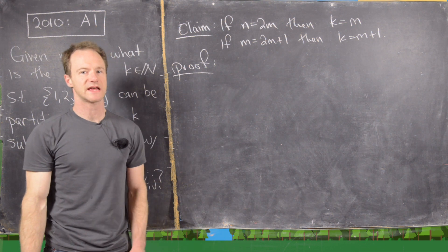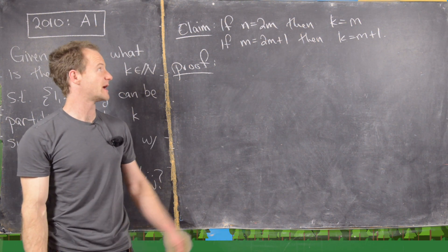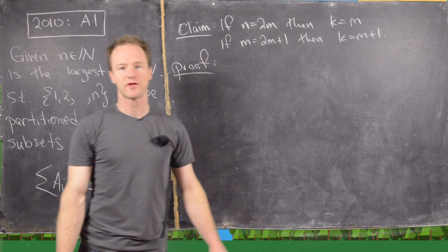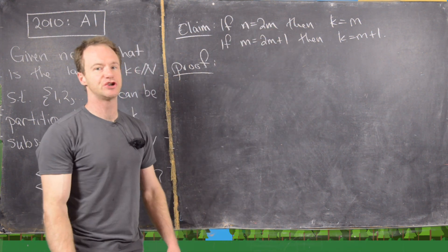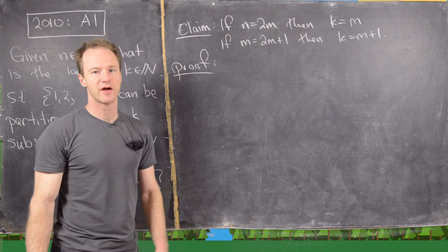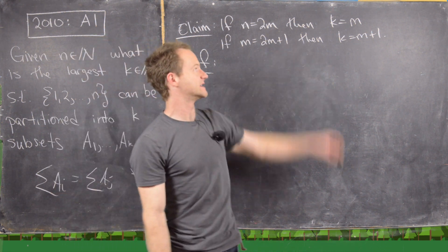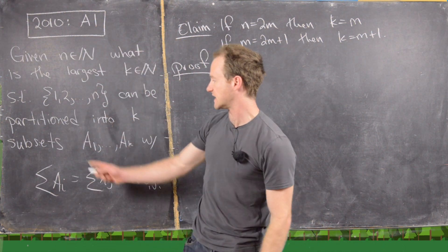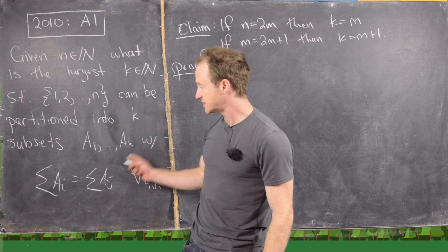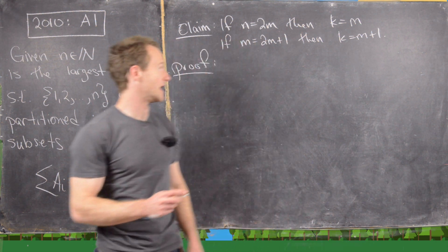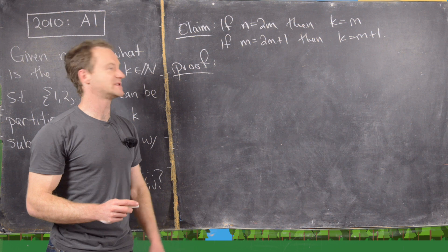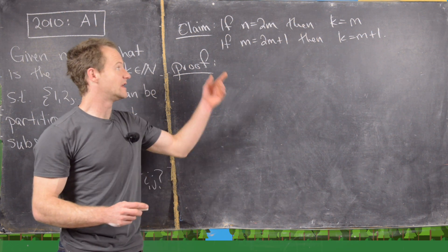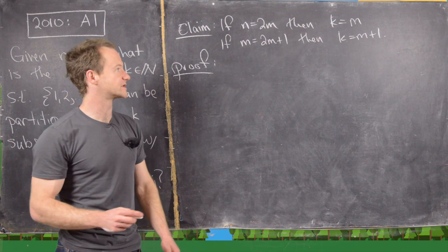We can summarize our exploration into the following claim. If N is even, that is N equals 2M for some natural number M, then K equals M — the largest number of equal-sum subsets is M. Furthermore, if N is odd, that is N equals 2M plus 1, then K equals M plus 1.